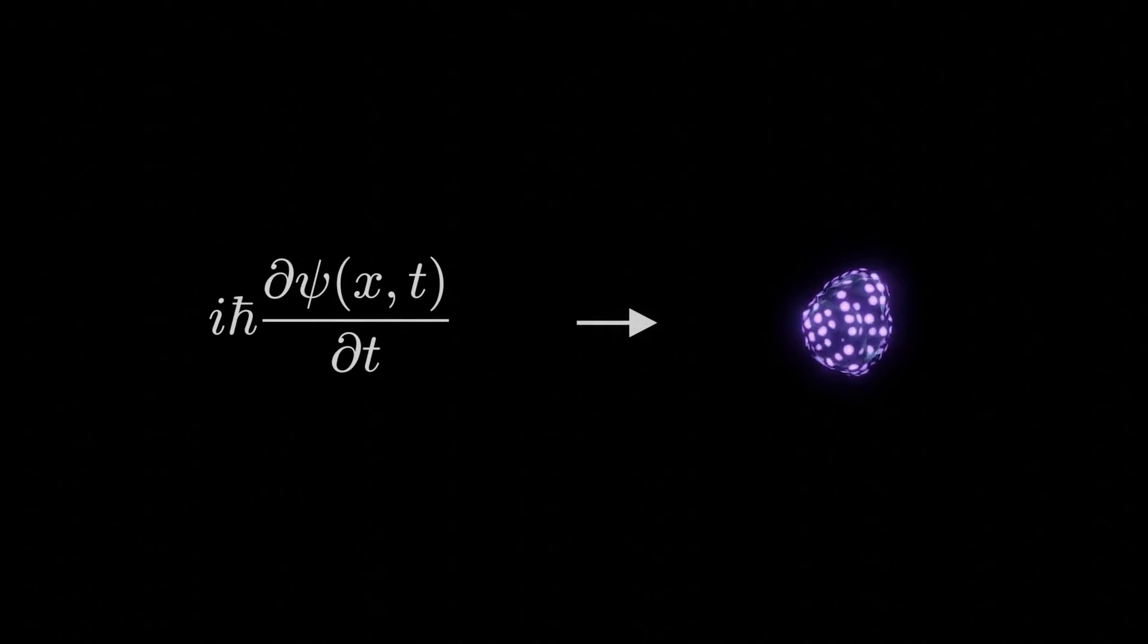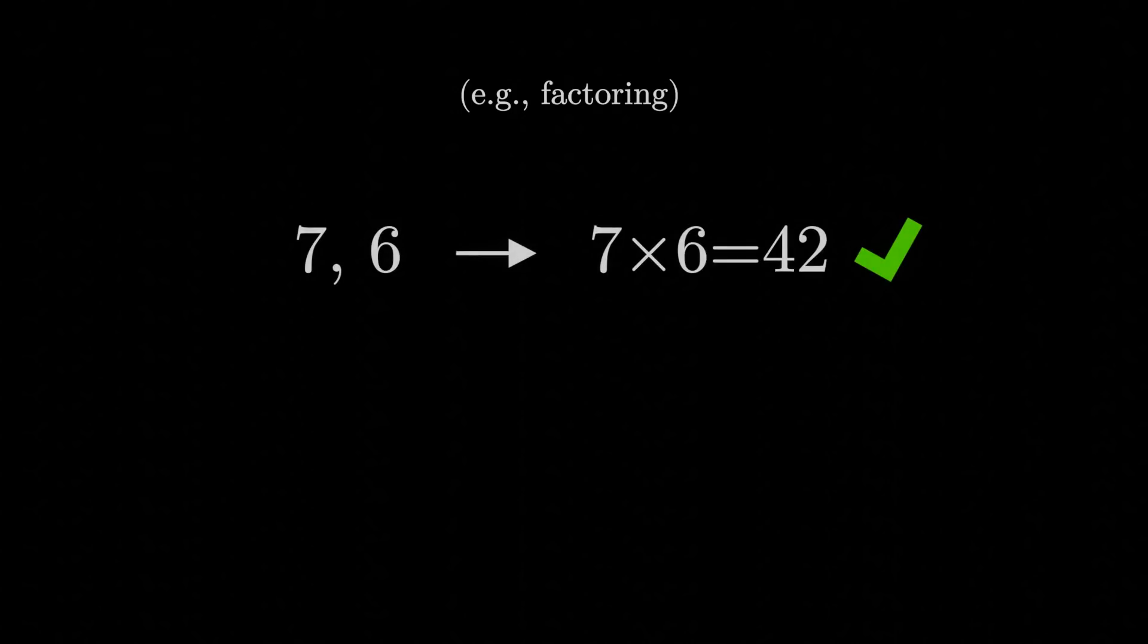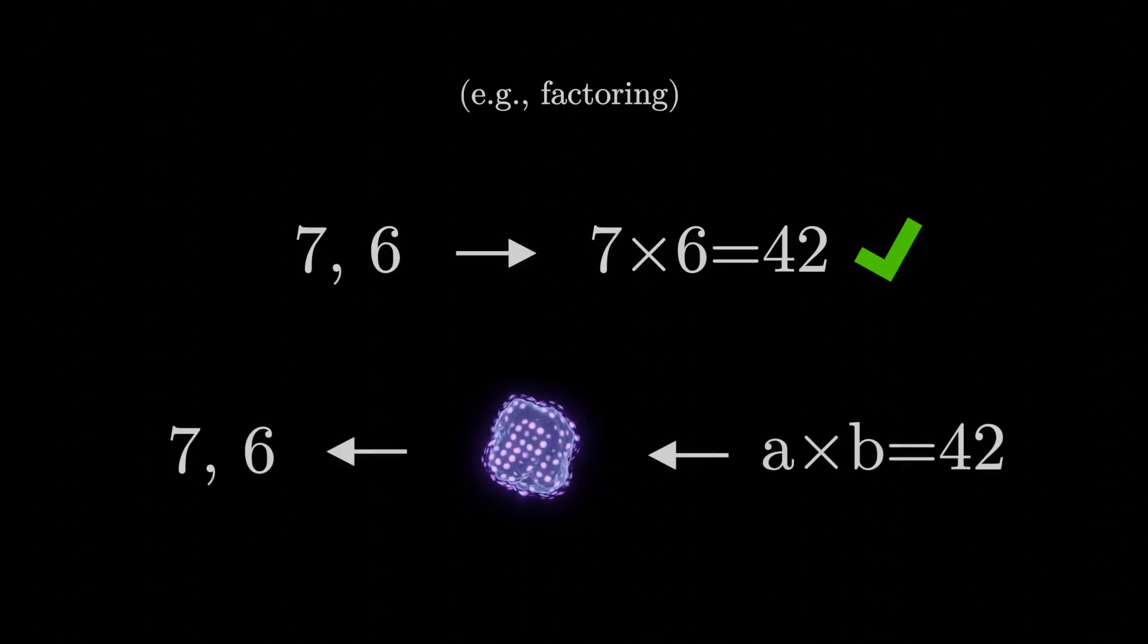Quantum computing is all about exploiting the strange and complicated rules that govern small objects to rapidly perform strange and complicated calculations. Today, we will walk through how quantum computing works from the ground up and explain how it can be used to solve some famously difficult problems faster than classical computing. Specifically, we will show how any problem for which we already know how to quickly check if an answer is correct can be sped up using a quantum computer.